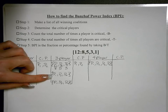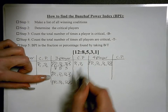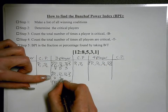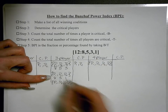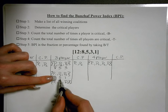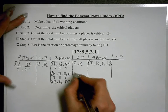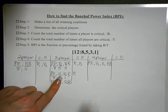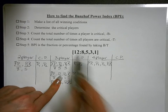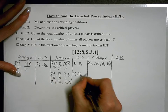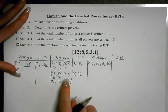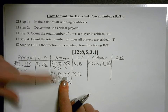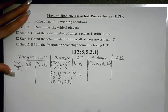Next coalition: player one, player two, player four — votes are eight, five, and one. Cover up player one's eight votes: five plus one is six, not enough — player one is critical. Cover up player two's five votes: eight plus one is nine, not enough — player two is critical. Cover up player four's one vote: eight plus five is thirteen, enough to pass — therefore player four is not a critical player.